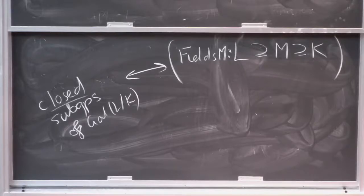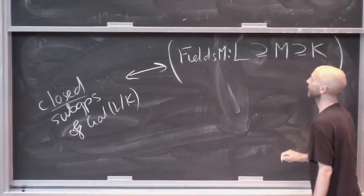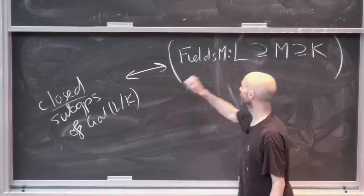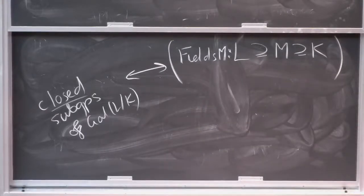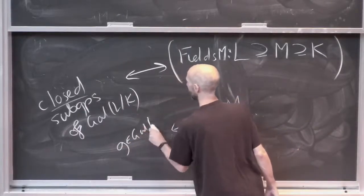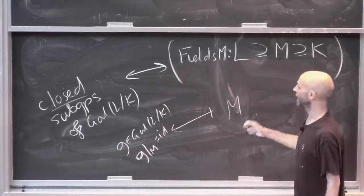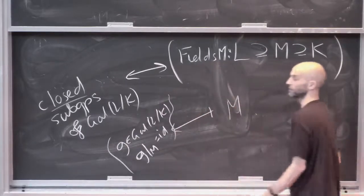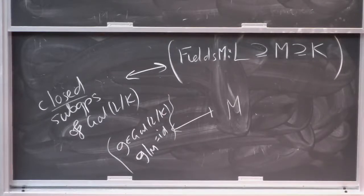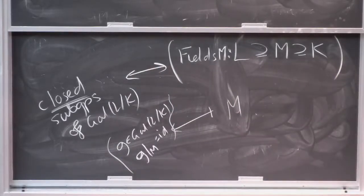In the infinite case, closed subgroups play a role because given a field M you consider the automorphisms of L which are the identity on M, and you can convince yourself that this is a closed condition. The dictionary is the same: M maps to {g ∈ Gal(L/K) : g|_M = id}, and one easily checks that subgroup is closed. So that's where the 'closed' condition comes from — there's the fundamental theorem, and on the way we've seen that Galois groups get a topology.